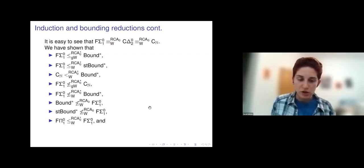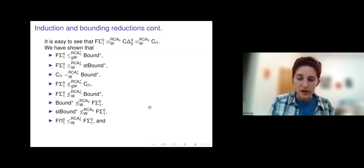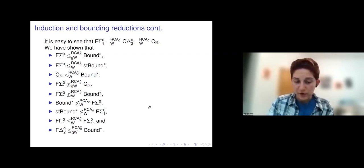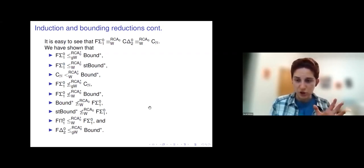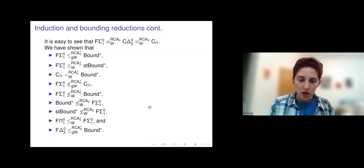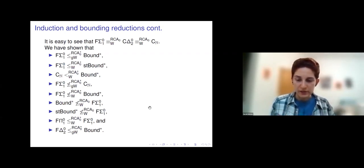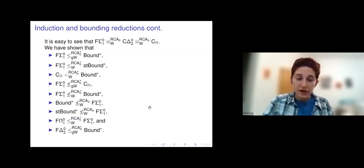I also found that FΠ⁰₁ is Weihrauch reducible over RCA₀* to FΣ⁰₁, but as alluded to earlier, this will not reverse. FΔ⁰₂ is generalized Weihrauch reducible over RCA₀* to Bound*, where FΔ⁰₂ is the same idea as FΣ⁰₁ extended to Δ⁰₂ sets — being careful about what a Δ⁰₂ set means in RCA₀ or RCA₀*. These reductions came about by thinking about the differences between the principles; there's no clear systematic method.